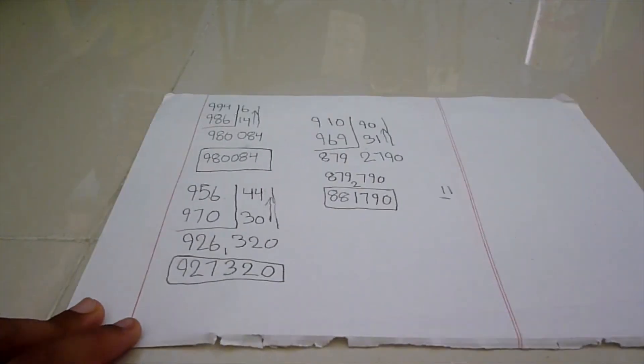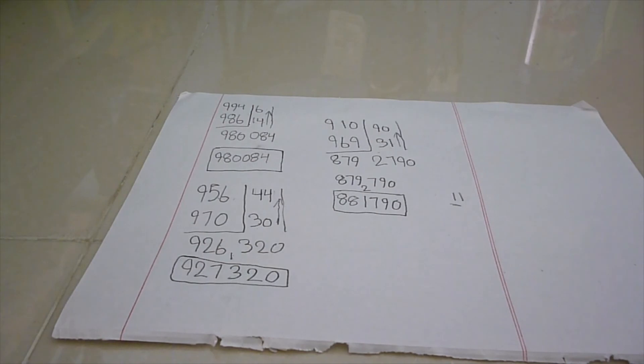Now, we have 3 examples and you can now multiply using the base as 1000 easily.